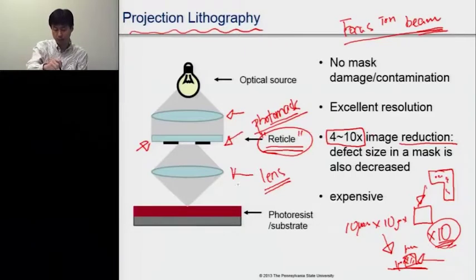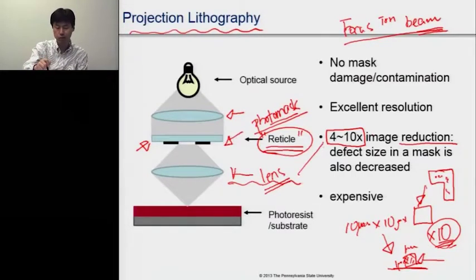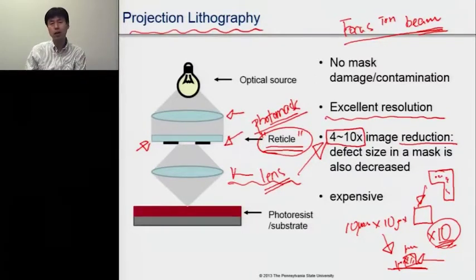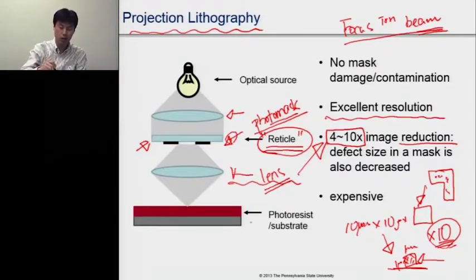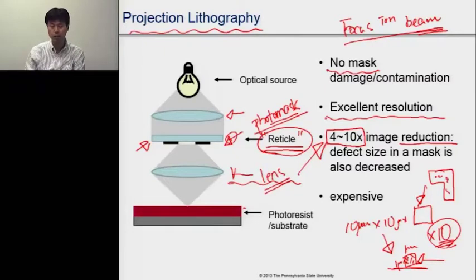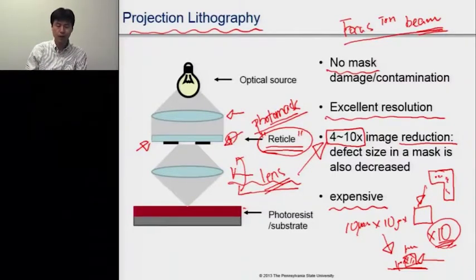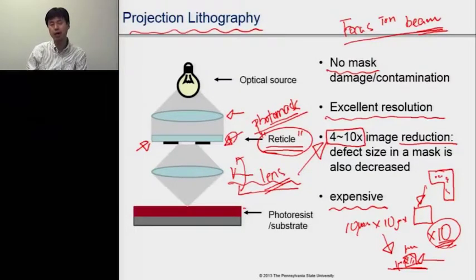When there is a defect, people can repair it using focused ion beam technology. The image reduction capability is very useful. Projection lithography offers better resolution compared to contact and proximity lithography, and since the reticle does not touch the photo resist directly, there is much less chance of damage and contamination. However, this tool uses a series of lenses to reduce the images, so the cost of the system is much more expensive than contact or proximity aligners.